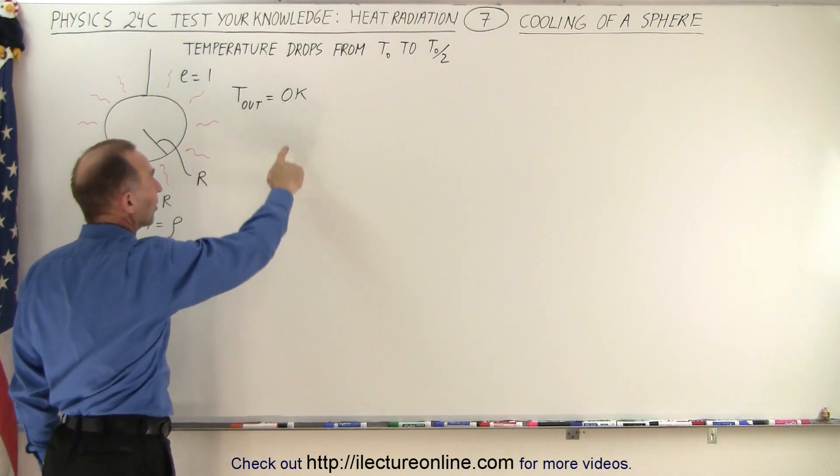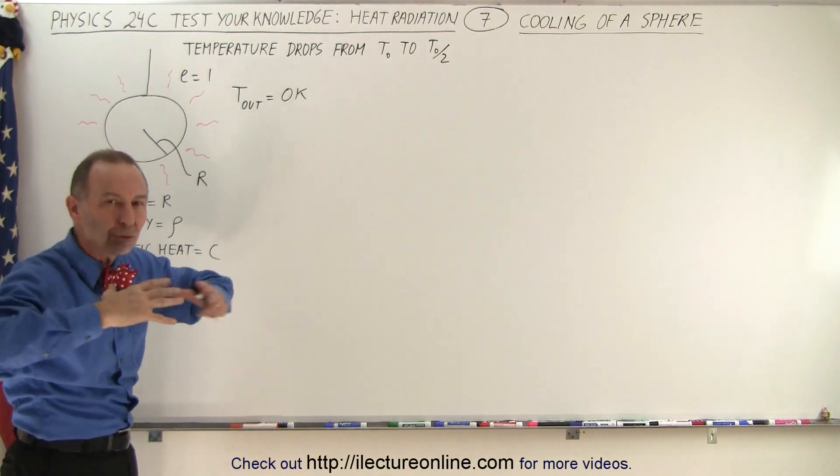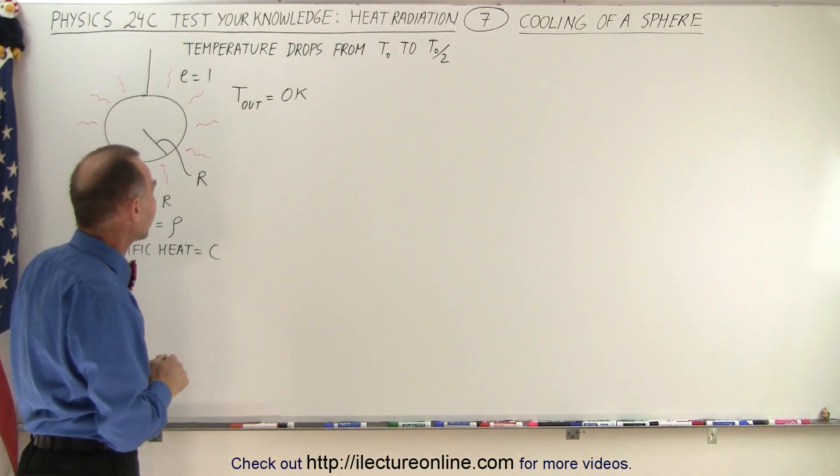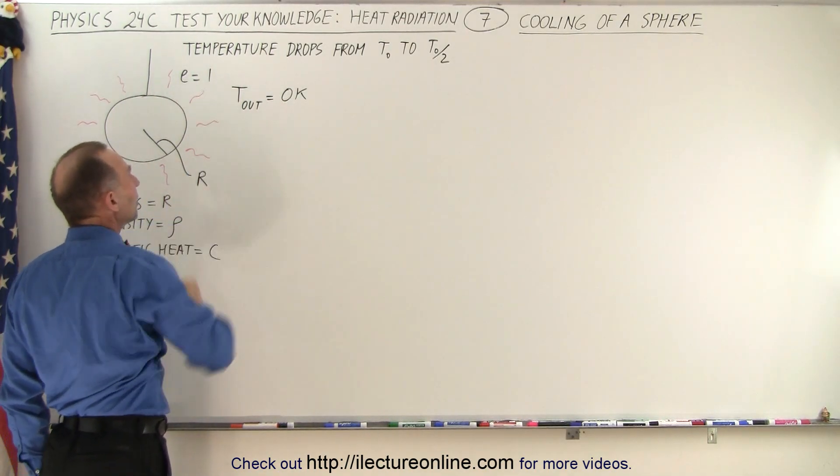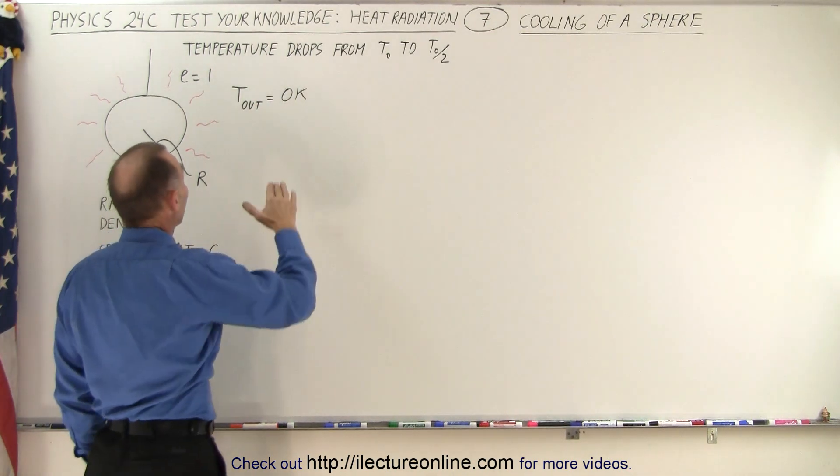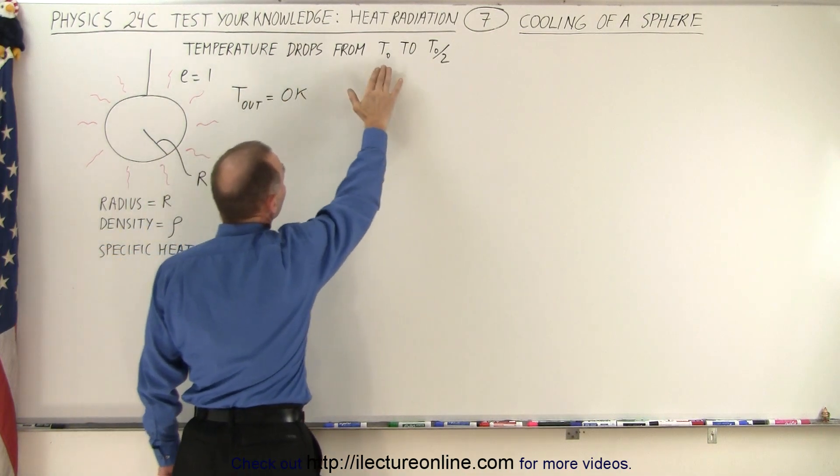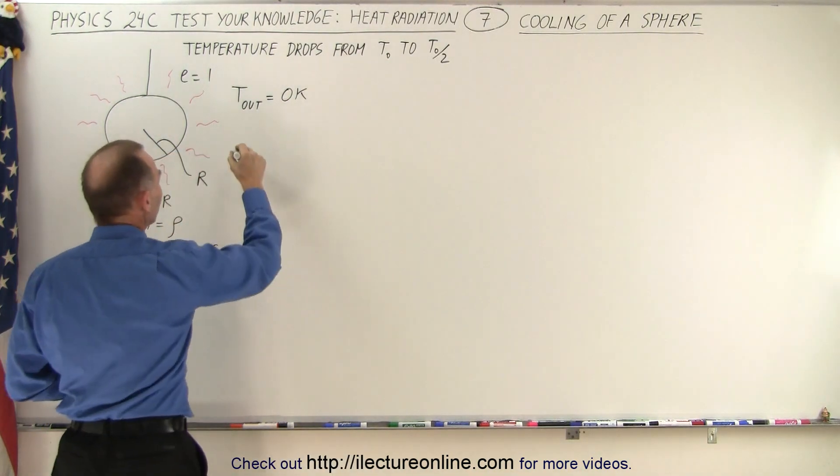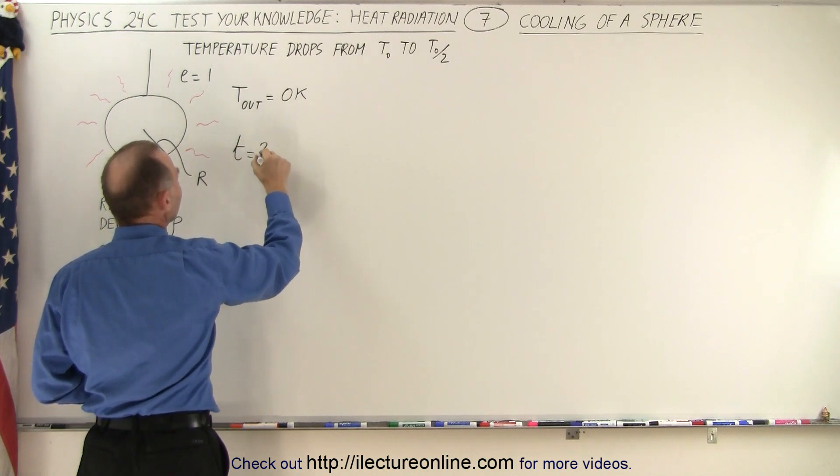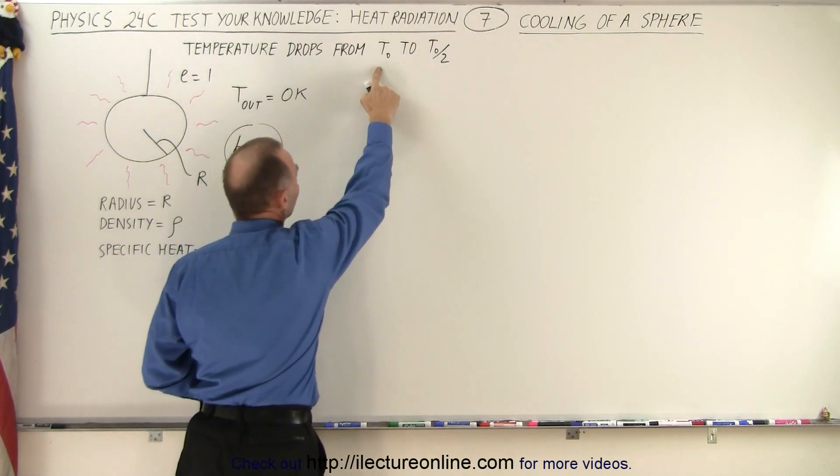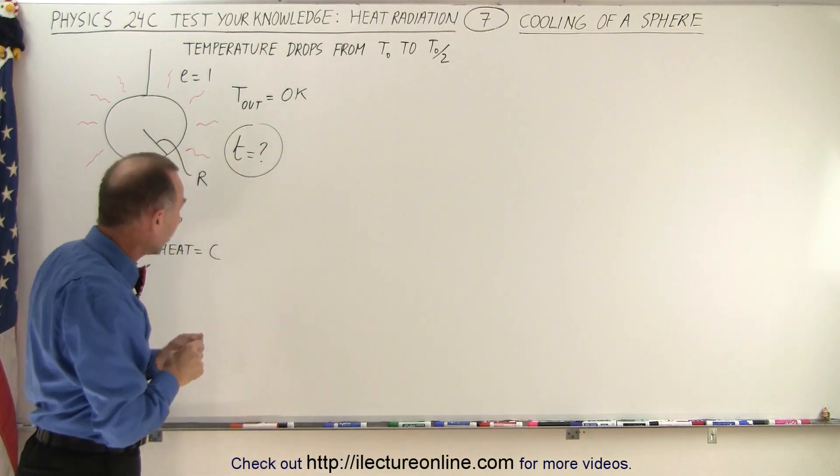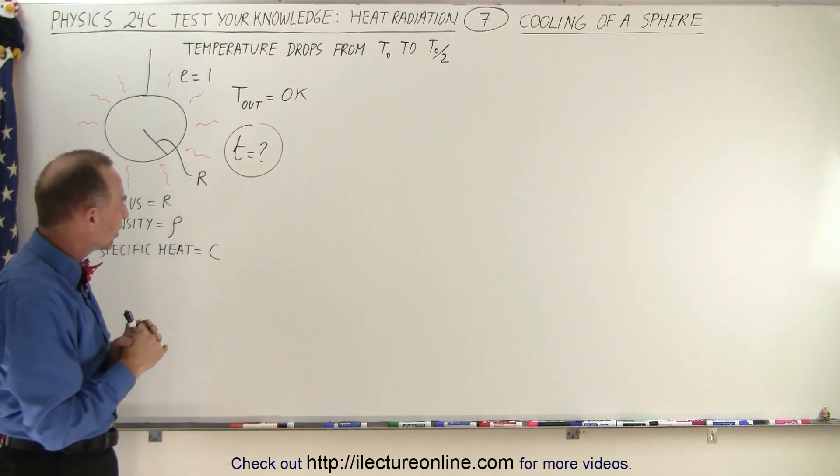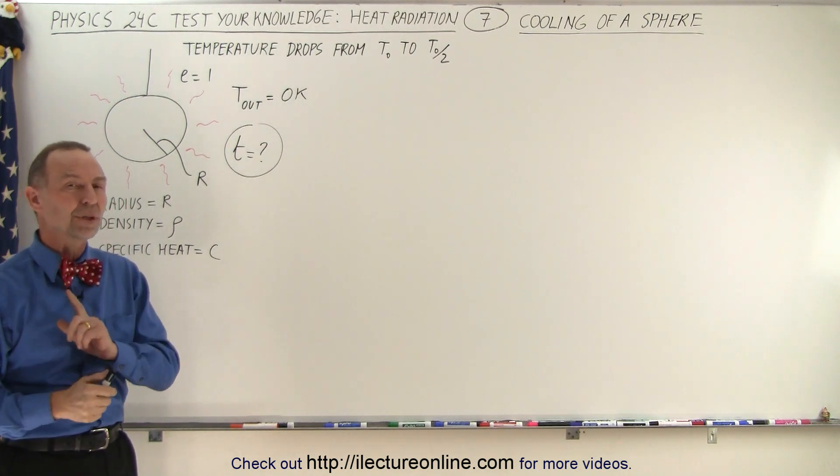The temperature outside is 0 Kelvin, so we're simply radiating out into empty space assuming the temperature is cool enough so we don't have to worry about it. The emissivity is taken to be 1, and we're trying to figure out as the temperature drops from T₀ to half the initial T, how long will that take? So we want to know the time for the temperature to drop from some initial temperature to half that initial temperature. These are the only things given. Seems kind of odd - you'd think I need more information. But let's start with this.